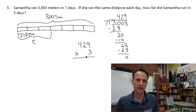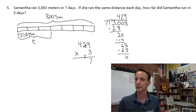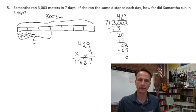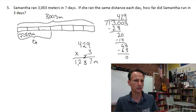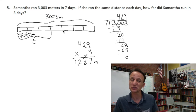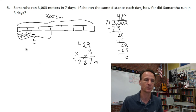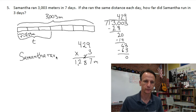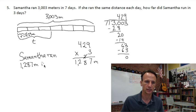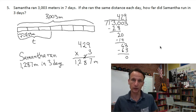Three times 9 is 27; three times 2 is 6 plus 2 is 8; three times 4 is 12. So Samantha ran 1,287 meters in three days. Does that make sense? About 400 times 3 is 1,200, and three of the seven days should be a little less than half of 3,000, which is 1,500 — and 1,287 is a little less than 1,500. Good, it all makes sense. Samantha ran 1,287 meters in three days. Homework time is over — see you next time!